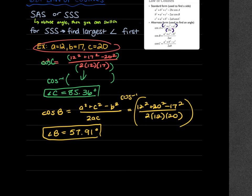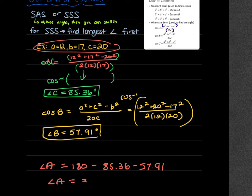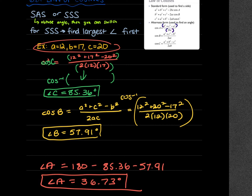Then to get angle A, I can subtract the other two from 180. Or I can do Law of Cosines to make sure I'm right — just don't waste too much time on that if you're short on time. If you're doing 180 minus the rounded values, that's fine. If you're doing Law of Cosines, it'll be more exact because you're using the original unrounded values.